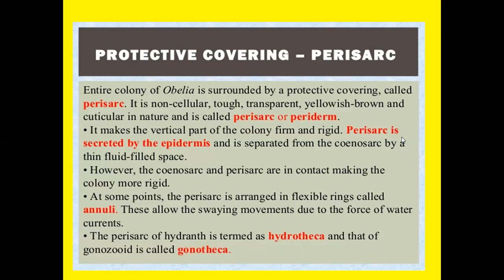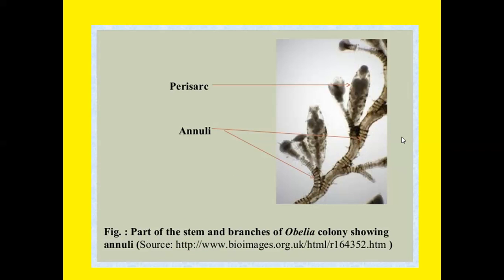Protective covering — the perisarc: the entire colony of Obelia is surrounded by a protective covering called the perisarc. It is a non-cellular, tough, transparent, yellowish-brown, chitinous material and is also called the periderm. The perisarc is secreted by the epidermis and separated from the coenosarс by a thin fluid-filled space, though they are in contact at some points. The perisarc is arranged in flexible rings called annuli which allow swaying movement due to water currents. The perisarc of the hydranth is termed hydrotheca and that of the gonozooid is called gonotheca.